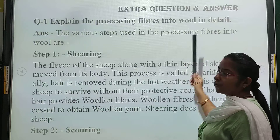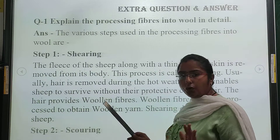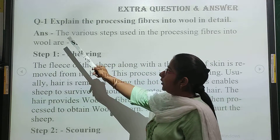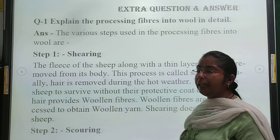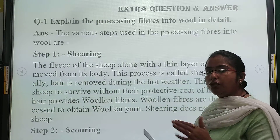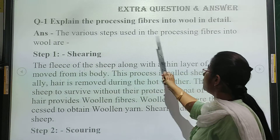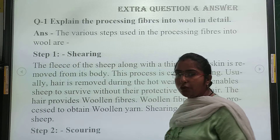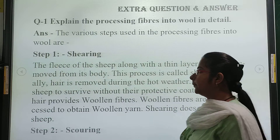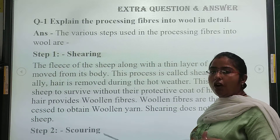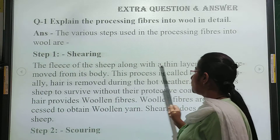Now we will do the extra questions and answers for this chapter. Question number 1: explain the processing of fiber into wool in detail. Step 1 is shearing. Shearing means removing the hair of the sheep along with the dead skin. The fleece of the sheep, along with a thin layer of skin, is removed from its body. This process is called shearing.